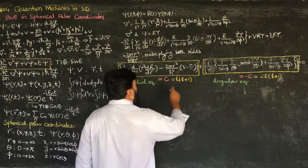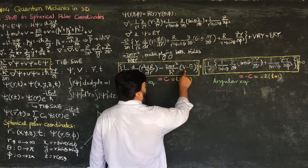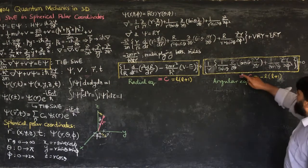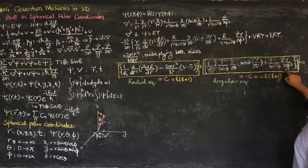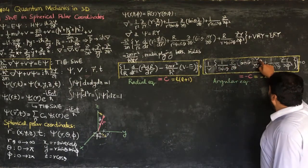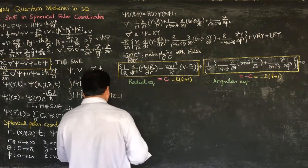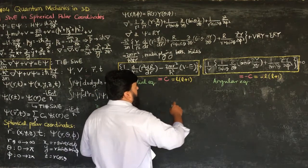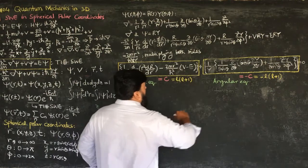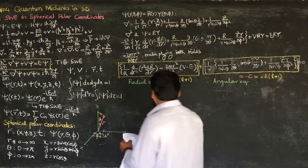Looking at the radial equation, it depends on the potential V. Only when V is known can we solve it. The angular equation, on the other hand, has no dependence on potential and can be solved directly. However, since Y is a function of both θ and φ, we apply separation of variables again, setting the angular equation equal to -l(l+1) and multiplying by Y sin²θ.